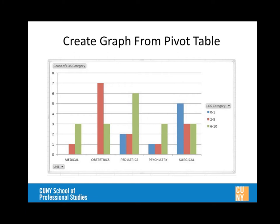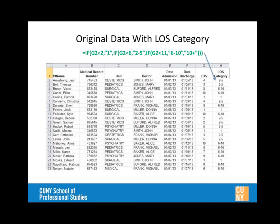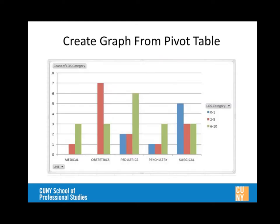Once the formula is copied down, every patient now has a length of stay category. Mike adds a patient with a discharge date of January 30th and another with January 29th, giving them longer stays over ten days, to demonstrate the 'ten plus' category. The data is now ready to create a pivot table.